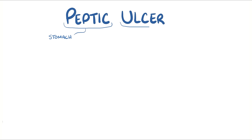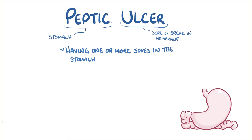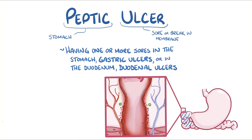Peptic refers to the stomach, and an ulcer is a sore or break in a membrane. Peptic ulcer disease describes having one or more sores in the stomach, called gastric ulcers, or in the duodenum, called duodenal ulcers, which are actually more common.